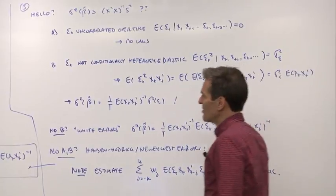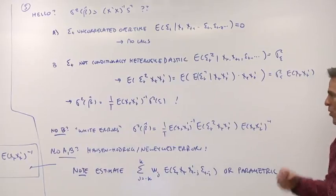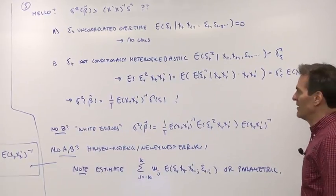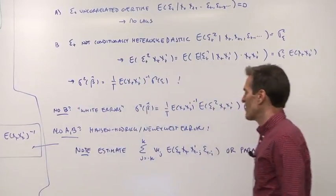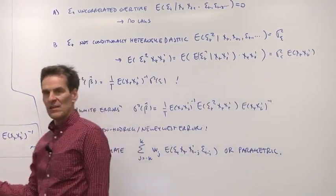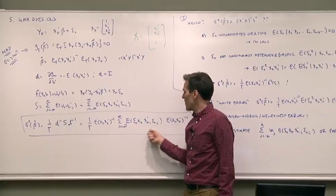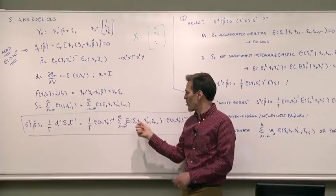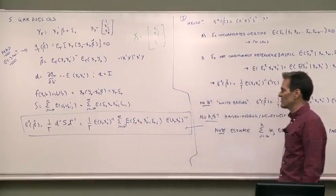What if the error terms are not independent over time? What if they're autocorrelated over time? That happens a lot. Well, now we get to use this formula. Those are called Hansen-Hodrick or Newey-West standard errors. This is a formula for the standard errors of the OLS regression coefficient that corrects for arbitrary autocorrelation of the errors over time, as well as arbitrary heteroscedasticity.